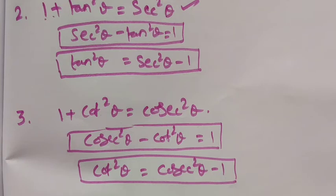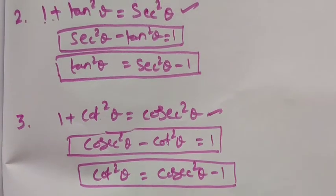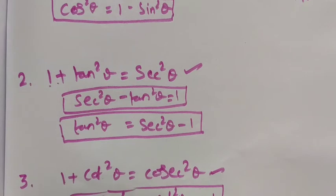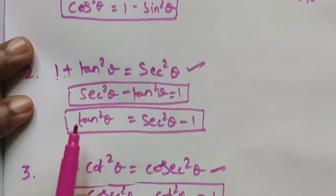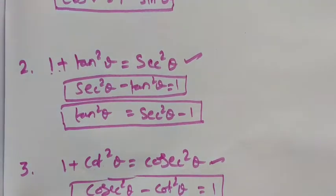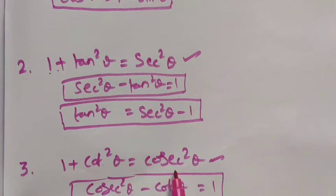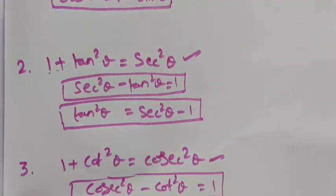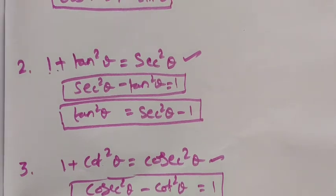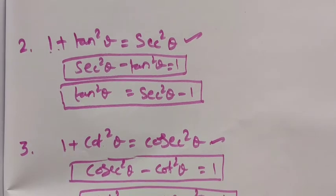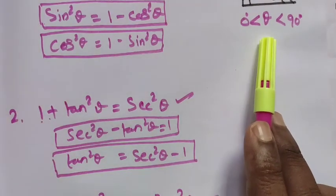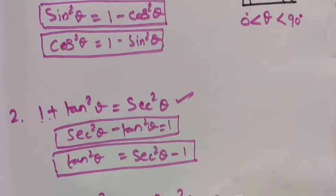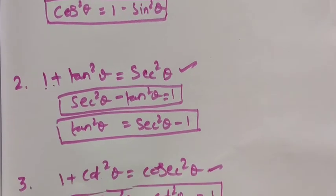So from the basic three identities — sin square theta plus cos square theta equals 1, 1 plus tan square theta equals secant square theta, and 1 plus cot square theta equals cosecant square theta — if you know these three identities, we can rearrange them in different methods to find values. They are satisfied only when theta is greater than 0 degree and less than 90 degree.